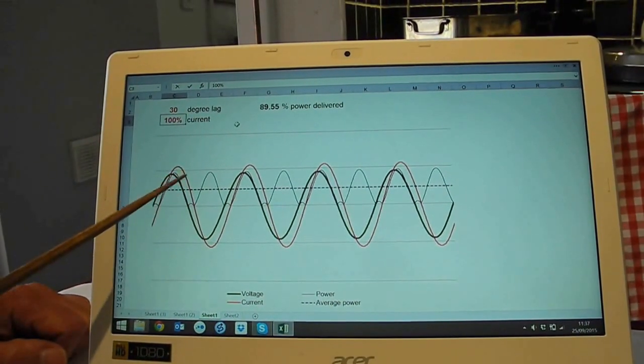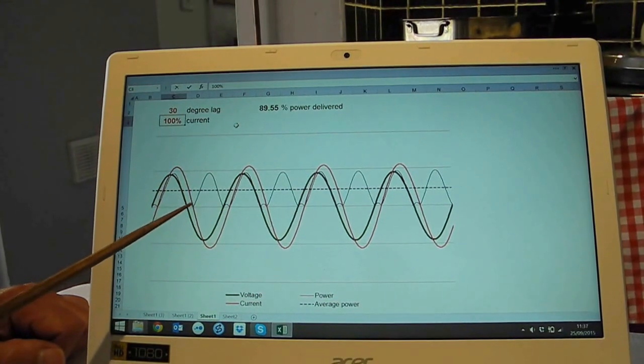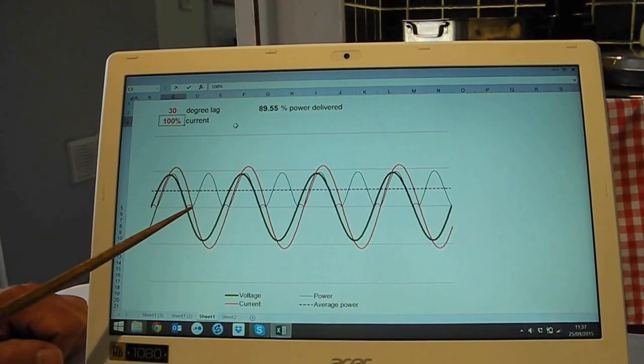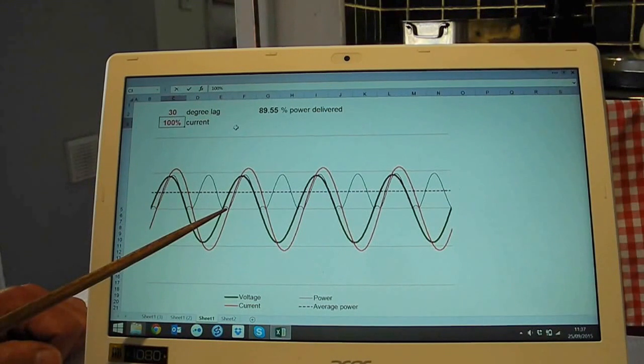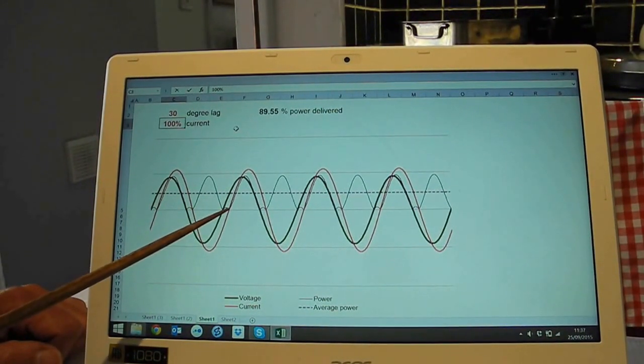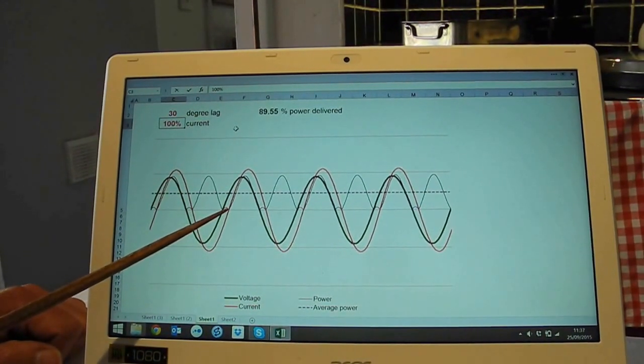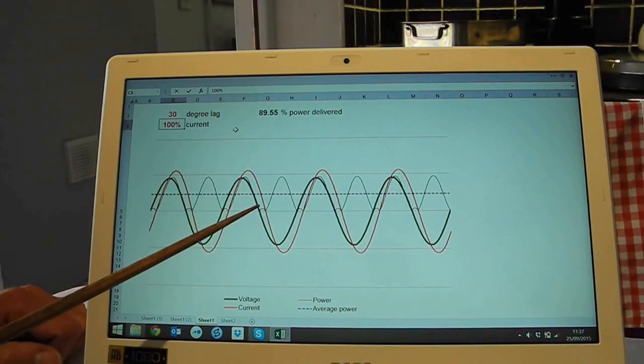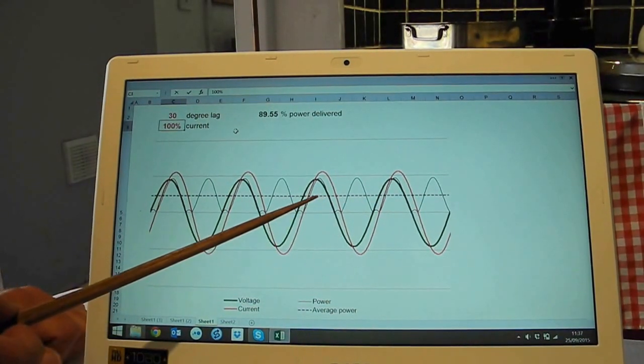Voltage goes down, current lags behind, and the power has a zero result four times every cycle because either the voltage or the current is zero at those moments. The amplitude has come down and the average power is lower.